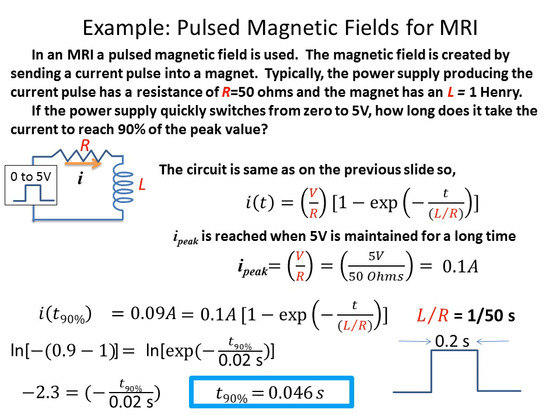What does this mean if we send in a pulse? Consider a pulse that's about two-tenths of a second long. If we apply this zero-to-five-volt pulse to the circuit, the current that comes through will look distorted — instead of having perfectly square edges, it will have a slower rise and a slower fall. So the pulse is distorted by being pushed into this inductor, which may or may not affect how well the MRI system works, but it's important to know.